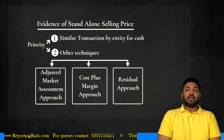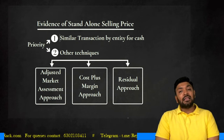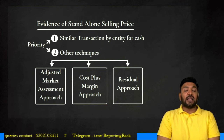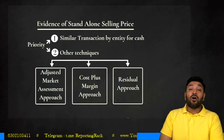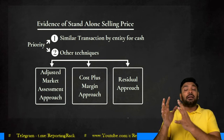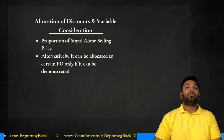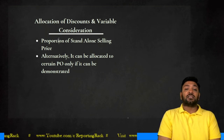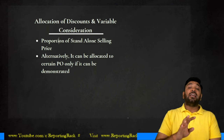If there is a variable consideration or a discount, it should be allocated to each performance obligation in proportion of their standalone selling prices. Alternatively, the company can specifically say that the bonus or discount is applicable only to a particular performance obligation and not others, if that can be demonstrated.